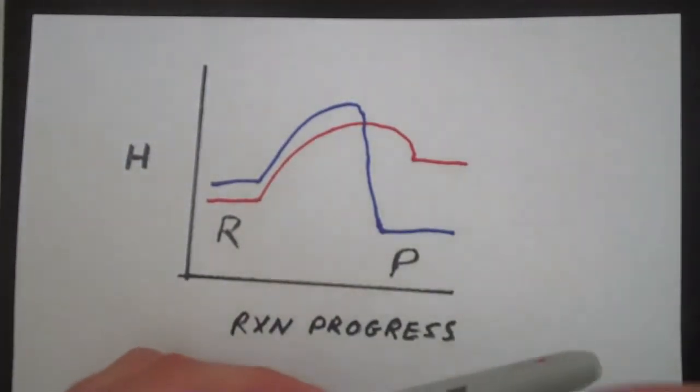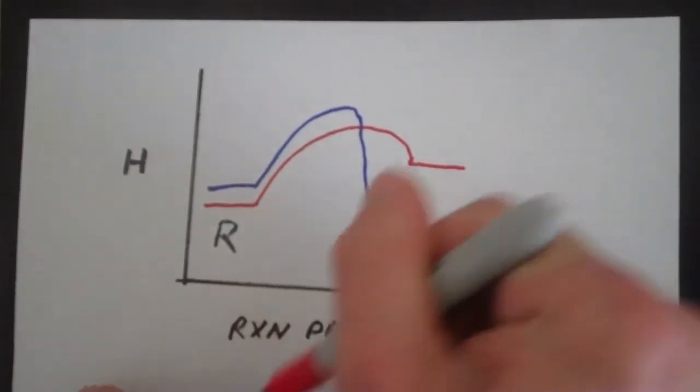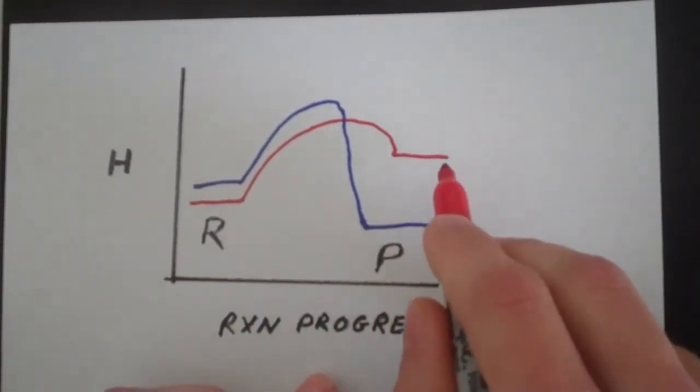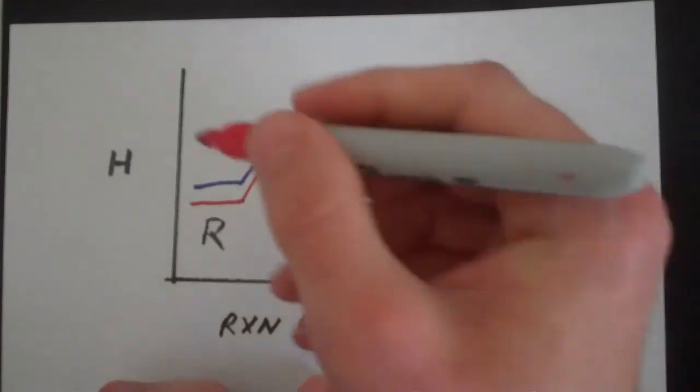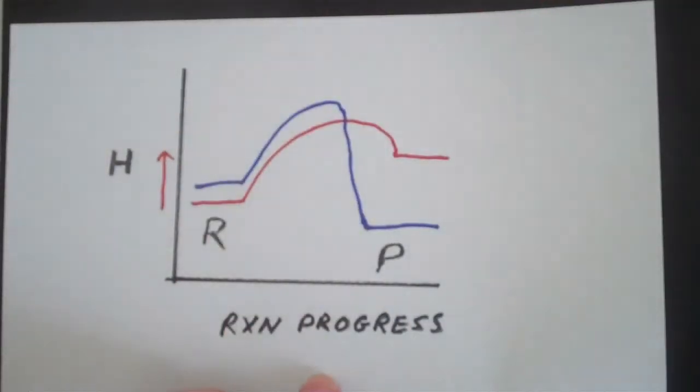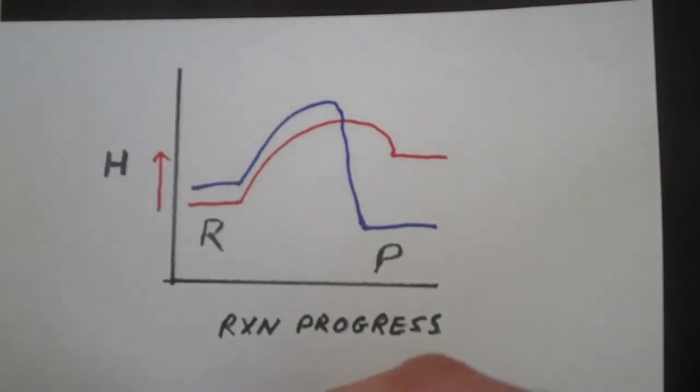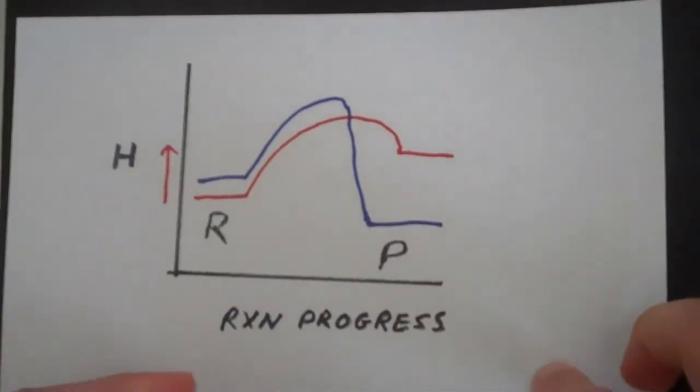Notice that for the endothermic process, the final energy of the products is higher than the energy of the reactants. So you're climbing up.